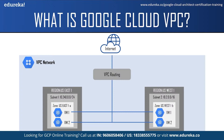There are two virtual machines in the US East subnet and two virtual machines in the US West subnet. These virtual machines can access the internet through VPC routing. VPC routing decides how to send traffic from virtual machine instances to the destination, which could be either other virtual machine instances or the internet. Now let us understand a few important concepts in VPC like IP addresses, routes and firewall rules. You will find all these concepts in Google Cloud VPC's console.